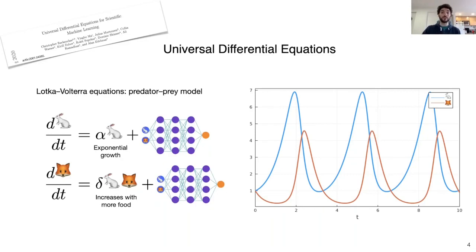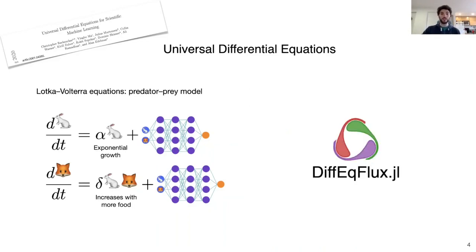Then you could even use sparse regression to get symbolic expressions out of your trained neural networks. This is an example of how you can make use of prior knowledge about your system and fill the gaps with machine learning. This is a really powerful tool and I strongly suggest you check out their paper and the DiffEqFlux package.